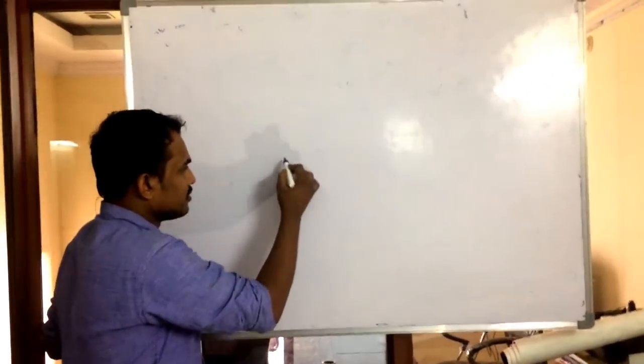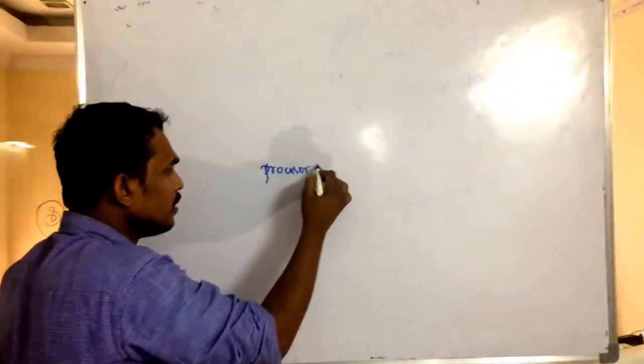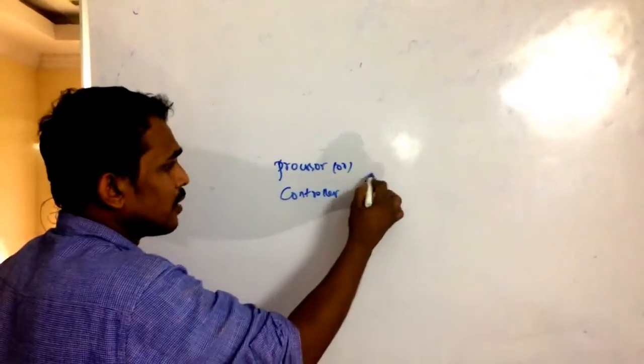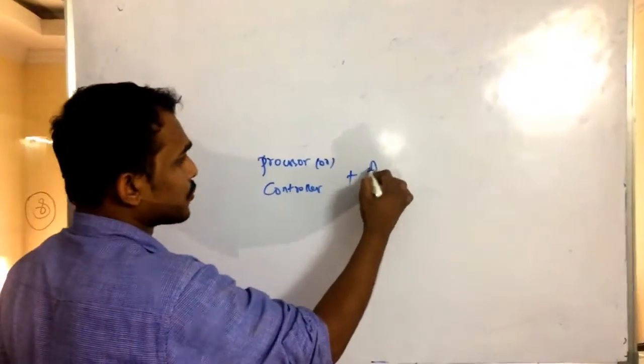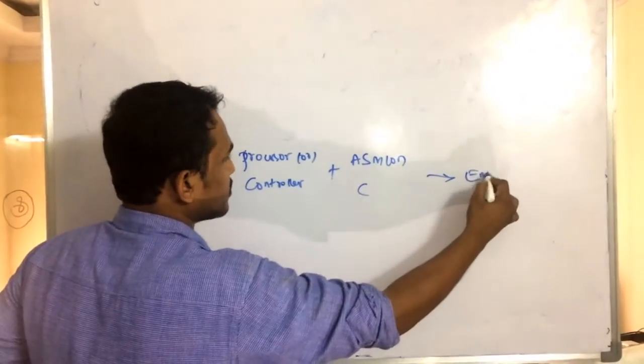So in an embedded system, there are advancements towards processors or controllers. Coming to language, you are going to use assembly or C language. It will become your embedded system.